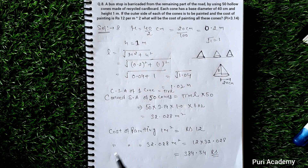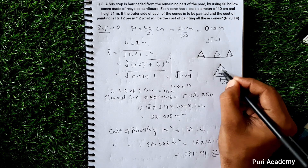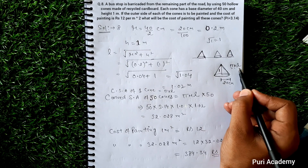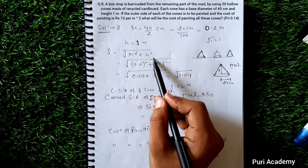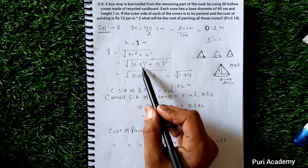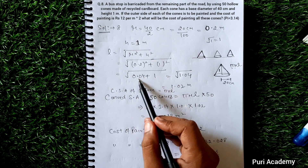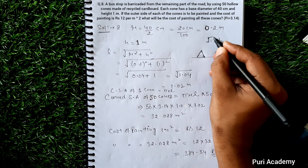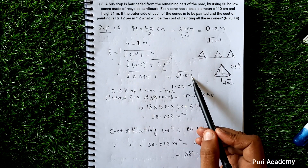Height is 1 meter. First of all, we need the curved surface area. The formula is π r l. We have to calculate l. What is l? l = √(r² + h²). So l = √(0.2² + 1²) = √(0.04 + 1). Under root of 1 is approximately 1. So l ≈ 1.02 meters.